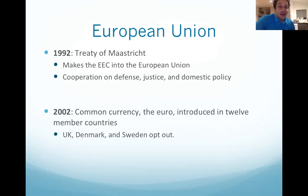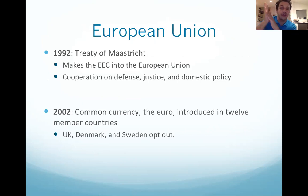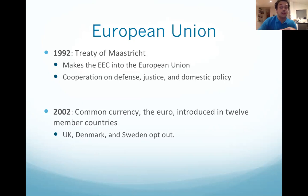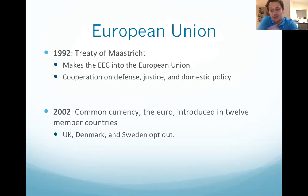The European Union became officially named on January 1st, 1993, in the aftermath of the Maastricht Treaty, when the EEC became the EU. This brought further cooperation on defence, justice, and domestic policy. By 2002, the euro was introduced in 12 member countries, with the UK, Denmark, and Sweden opting out. The Treaty of Nice was important for reforming the institutional structure, followed by the 2004 'big bang' enlargement of 10 former Soviet satellite states — including Poland, the Czech Republic, and the Baltic countries — joining the EU.